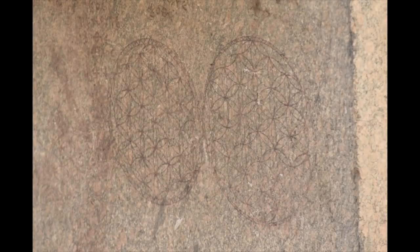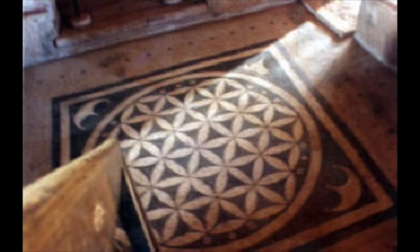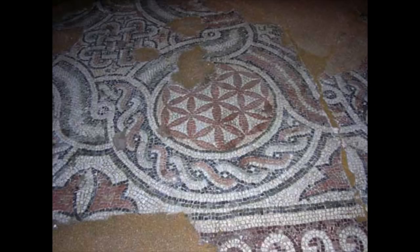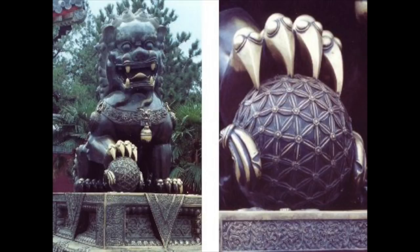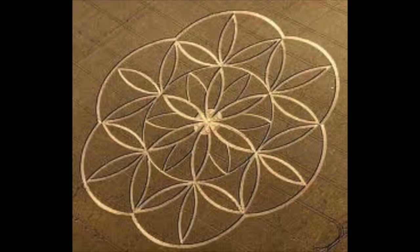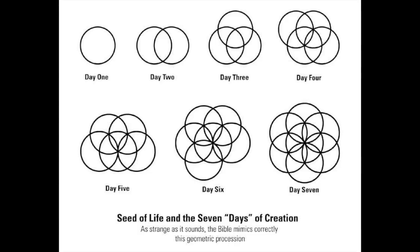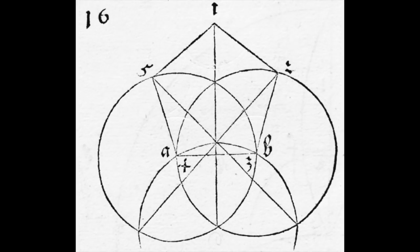Yet it was preserved by different people around the world, only to have been largely forgotten. The method by which the seed of life is to be drawn represents the genesis of the universe itself. It's a philosophy created through art. Each additional circle adds a new set of complex systems and incorporates further mathematical formulas.